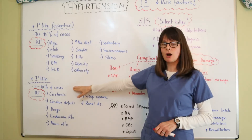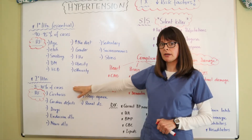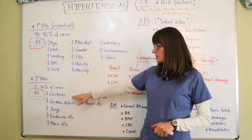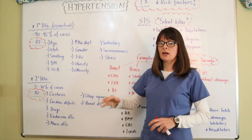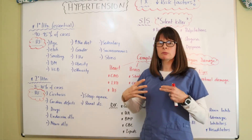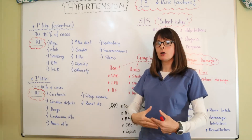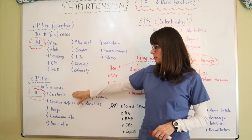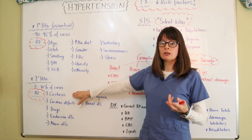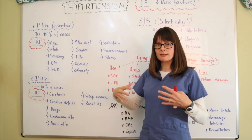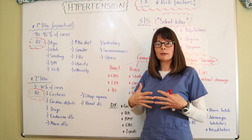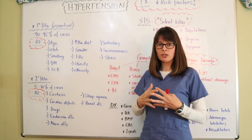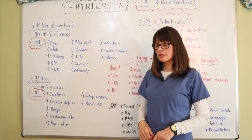Secondary hypertension accounts for only about 5 to 10% of cases, and here the hypertension is caused by something else — a secondary cause in the patient's body. Cirrhosis is a big one because it causes more water retention as blood backs up through the liver, leading to portal hypertension and then systemic hypertension.